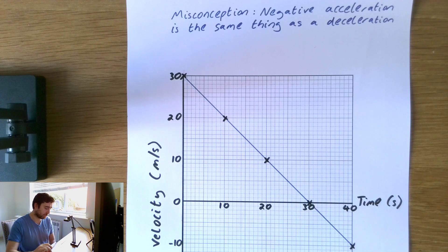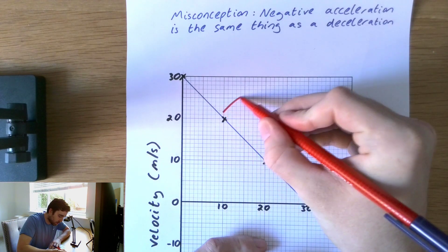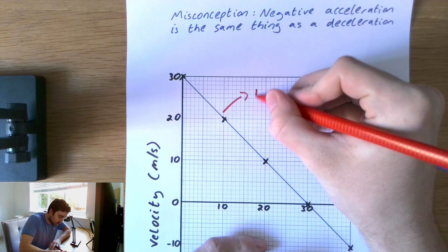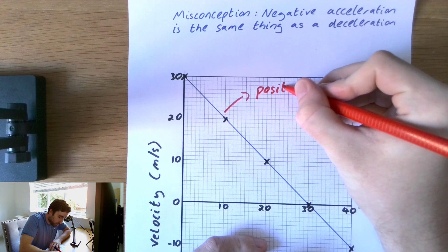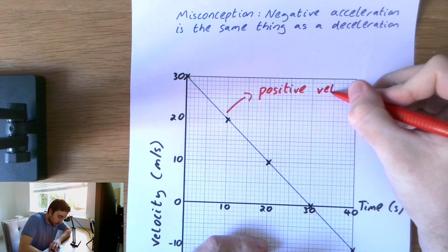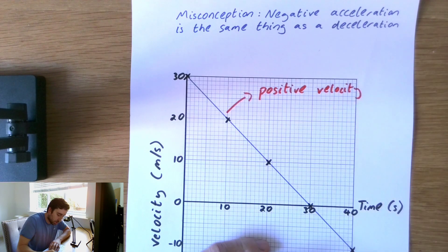So I've got a velocity time graph here where a constant force is being applied in the backwards direction against an object. And we can see here that it starts off with a positive velocity. Now the positive is important.